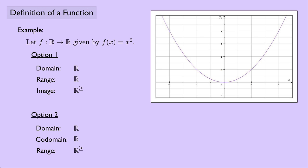Here's another option. Option two: the domain is all real numbers, the codomain is all real numbers (referring to the second ℝ), and the range is all real numbers greater than or equal to zero. You can see a problem: option one called the range all real numbers, but option two calls the range all real numbers ≥ 0. Option three: the domain is all real numbers, the range is all real numbers ≥ 0, and we simply refuse to give a name to set B. This option is very popular in real analysis.